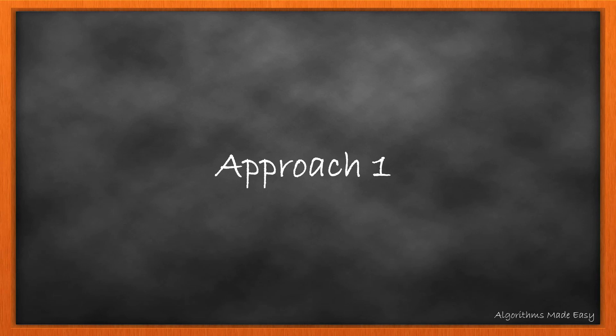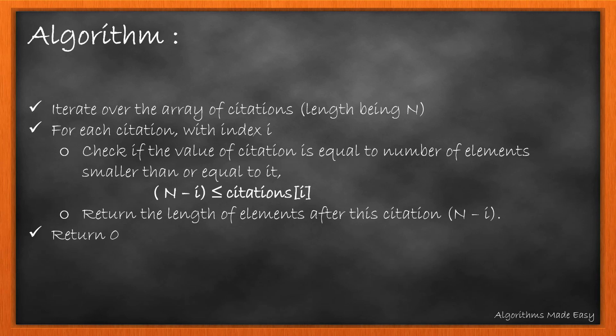Let's go through the first approach wherein we will iterate over the citations array of length N. For each citation, we check the below condition. Here, N-I will always give you the number of values greater than or equal to the current value. If the condition gets satisfied, we return the value N-I. If we do not get a value satisfying the condition, we return 0. Let's see it visually.